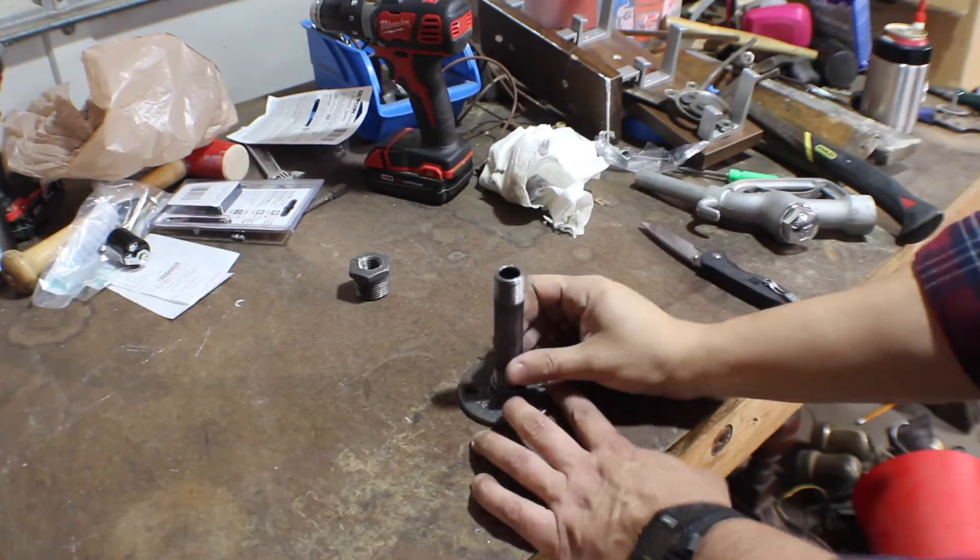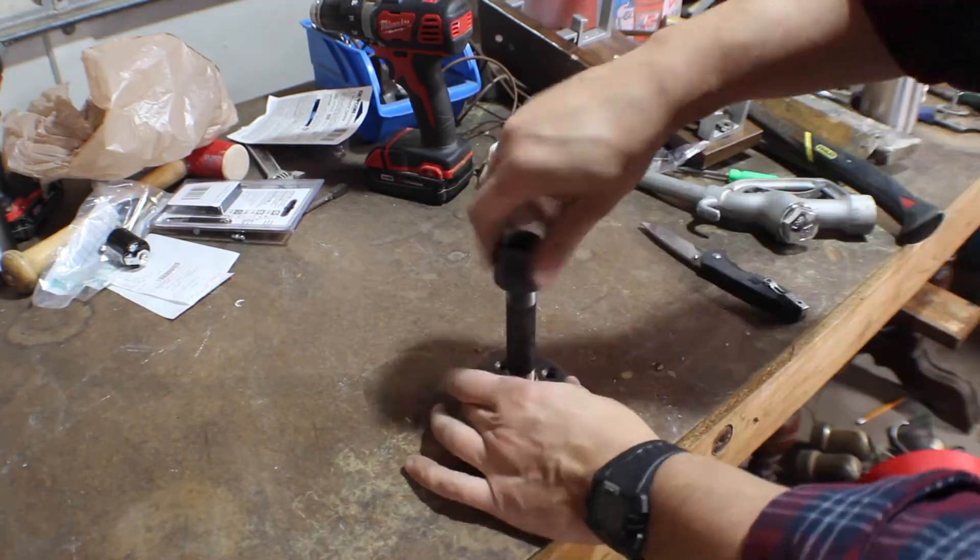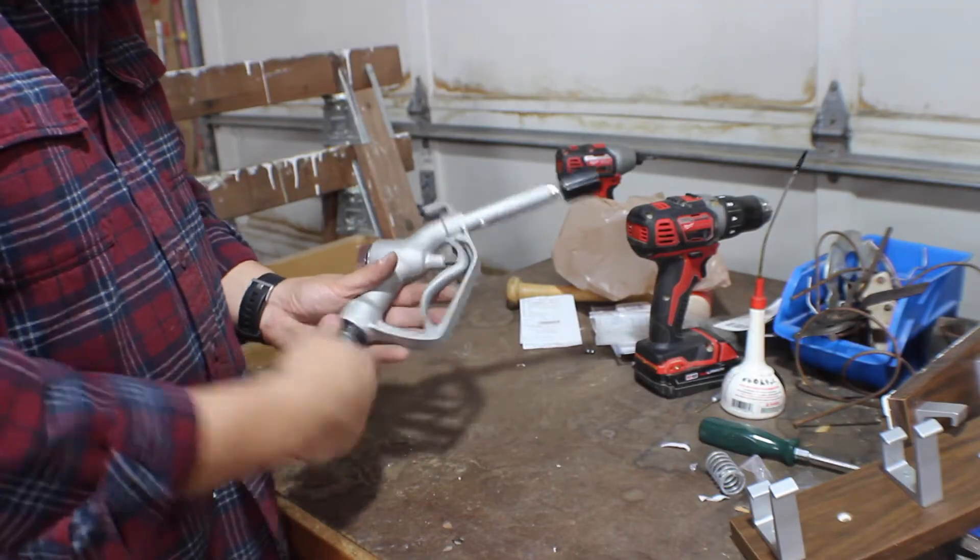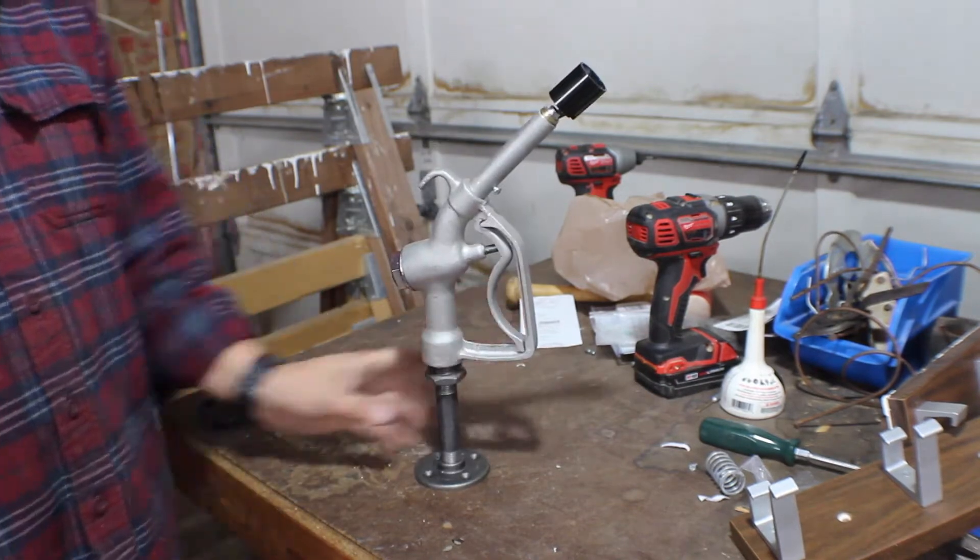The base of the pump handle fits standard black iron pipe. I reduced it down to a half inch, added a little spacer there, and then connected it to a floor flange.